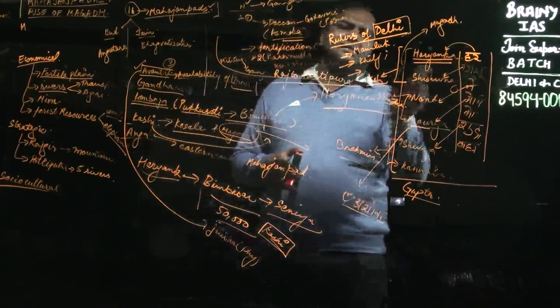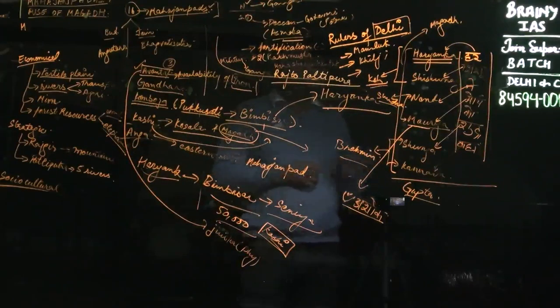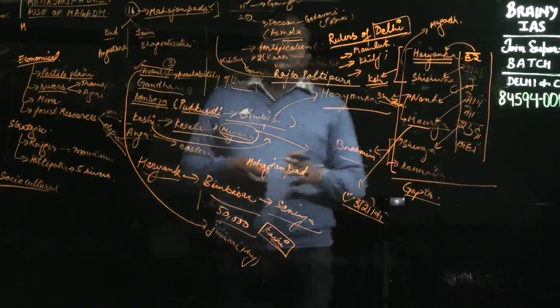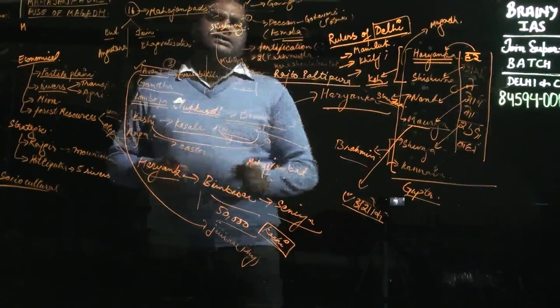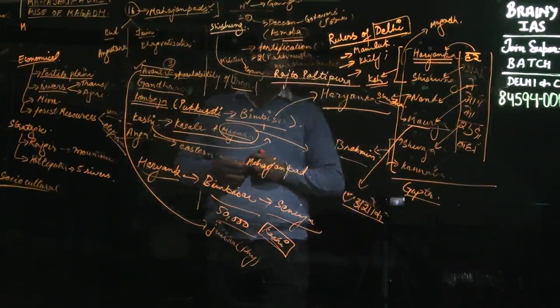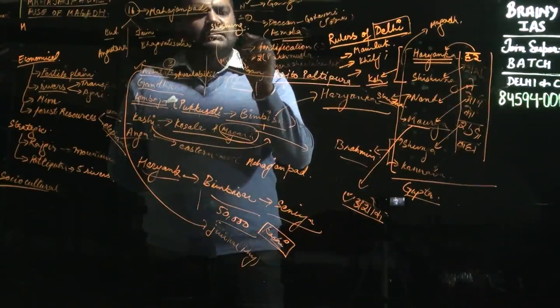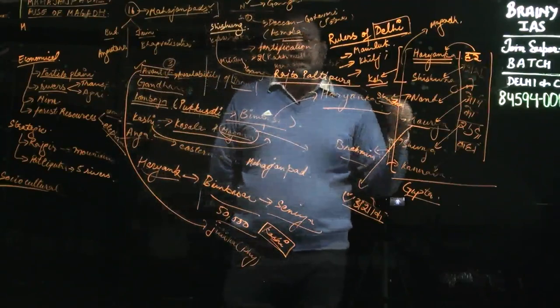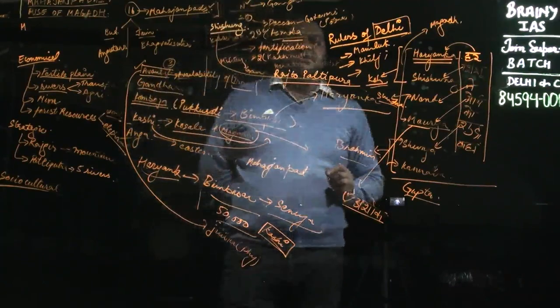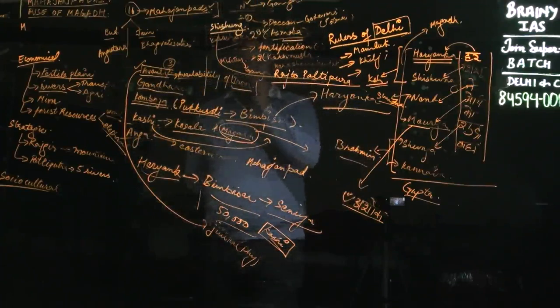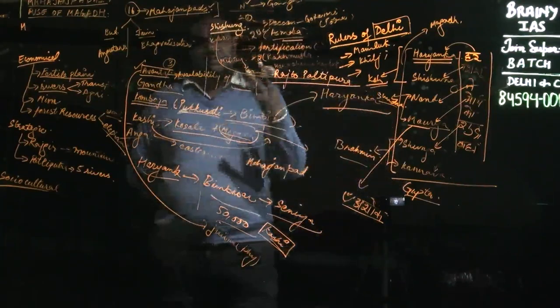The next dynasty is the Shishunaga dynasty. The founder was Shishunaga himself. The second important ruler was Kalashoka. Kalashoka was important for the Second Buddhist Council, which he convened. Then he shifted his capital from Pataliputra to Vaishali.